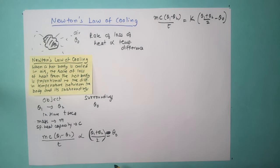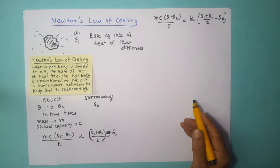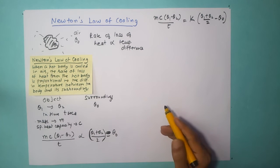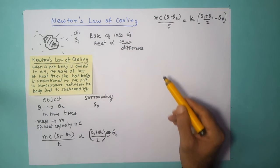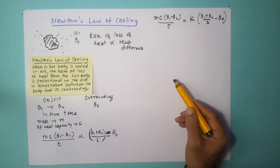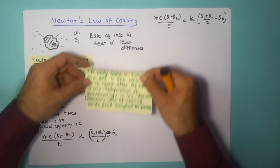One more thing about Newton's law of cooling: the law is applicable only when the temperature difference is not too large. If the temperature difference is very high, the rate of heat loss doesn't follow Newton's law of cooling, so Newton's law is not applicable in that case. We will now do a numerical question so that you are able to understand this better.